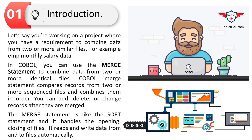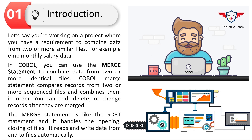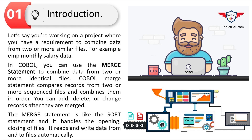Let's say you're working on a project where you need to combine data from two or more similar files — for example, employee monthly salary data. In this scenario, you can use either a JCL sort utility or a COBOL program to merge data from two identical files. In COBOL, you can use the COBOL merge statement to combine data from files. It compares records from two or more sequenced files and combines them in order. You can also add, delete, or change records after they are merged.